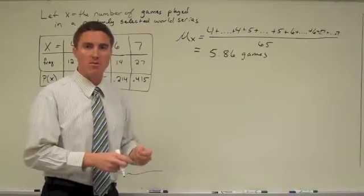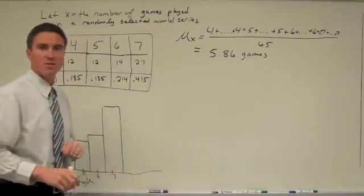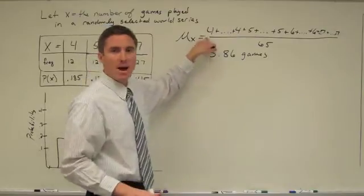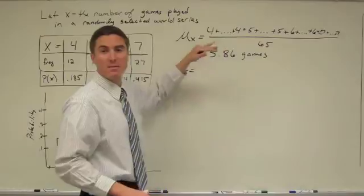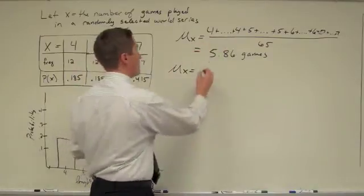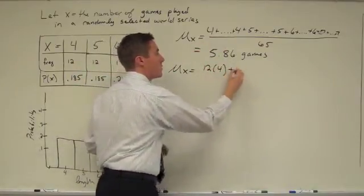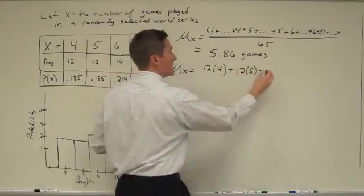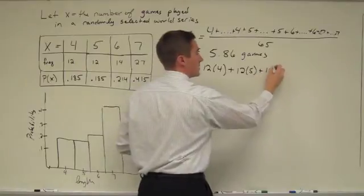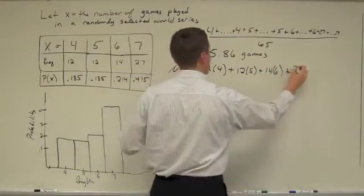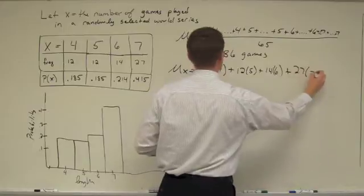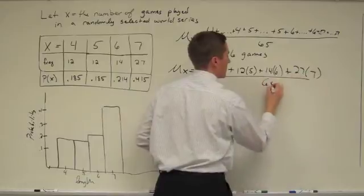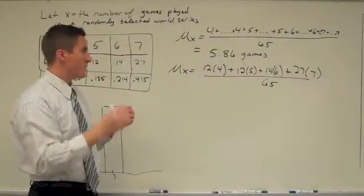Okay, so how can we boil this down a little bit more? Because they're not always going to give us this frequency. So let's actually take a look at this. Notice this mu of x would actually equal, if you think about how many four game series that I had, I actually had 12 of those. So it's like 12 times 4, plus I had 12, 5 games, plus I had 14, 6 games, and plus I had 27, 7. Series games. Divide this all by 65. It's essentially what we did. Now, let's just take this one step further.